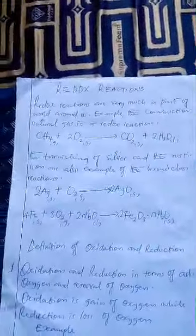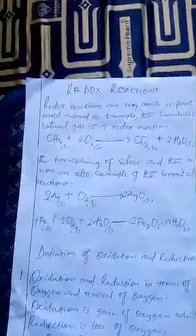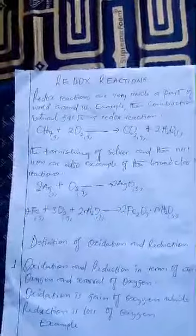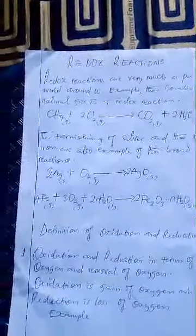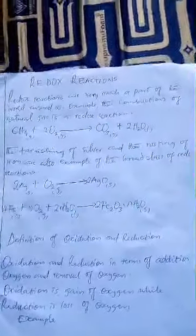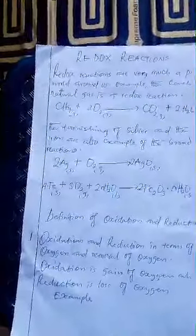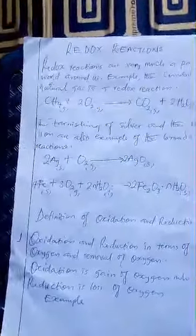You see silver combining with oxygen to form silver oxide — that is also a redox reaction. And iron combined with oxygen in the presence of water molecules to produce the rust state of iron — this is oxidation. The addition of oxygen to iron in the presence of water is a redox reaction.